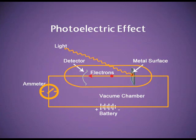Photoelectric effect. Here you can see the light in the form of a wave striking or hitting a clean metal surface which is placed in an evacuated tube. As soon as this light strikes the surface of the metal, an electron is ejected. This is known as the photoelectric effect. There are some metals like potassium, rubidium, and cesium on which when light strikes, electrons are ejected. These electrons are known as photoelectrons.